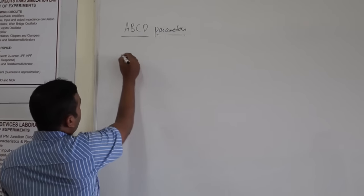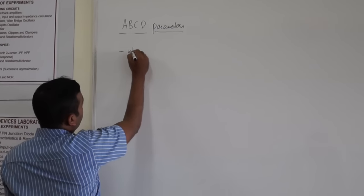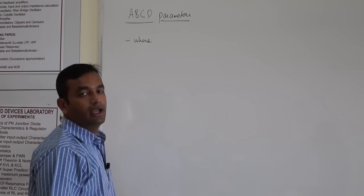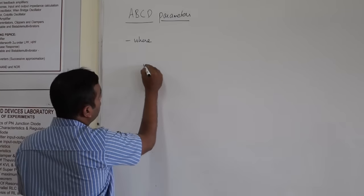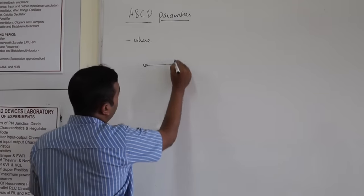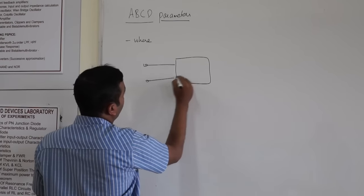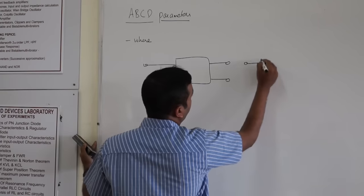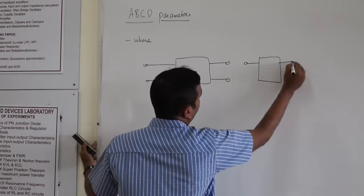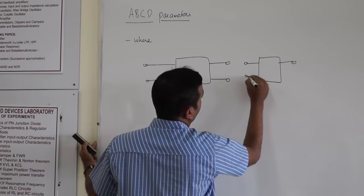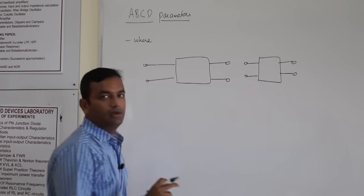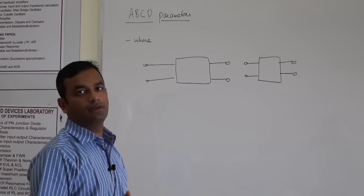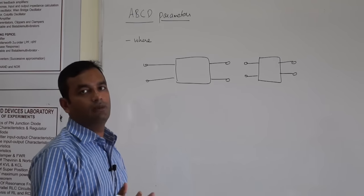Before we start with ABCD parameters, the first question is: where do we use ABCD parameters? Whenever you want to cascade two networks — I have a two-port network and another two-port network — whenever you want to connect or cascade these two networks, we go for ABCD parameters.